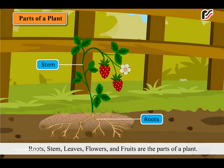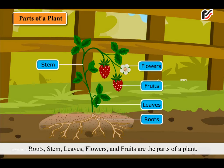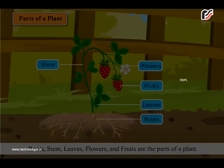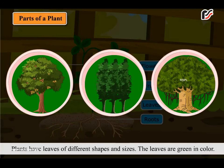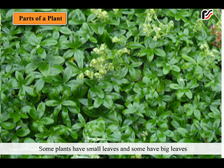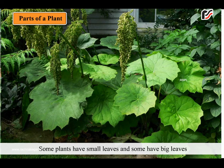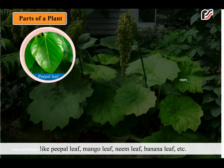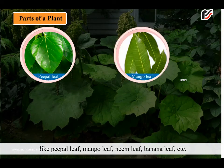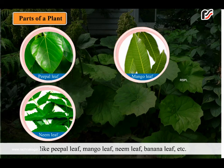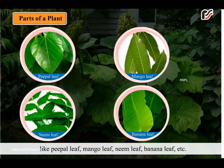Roots, stems, leaves, flowers and fruits are the parts of a plant. Plants have leaves of different shapes and sizes. The leaves are green in color. Some plants have small leaves and some have big leaves, like pepper leaf, mango leaf, neem leaf, banana leaf etc.